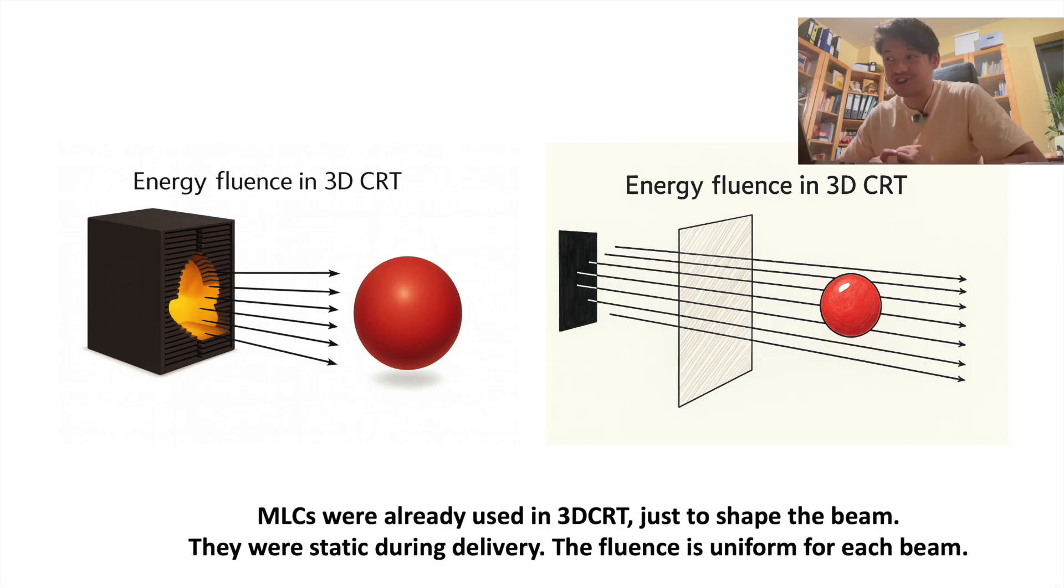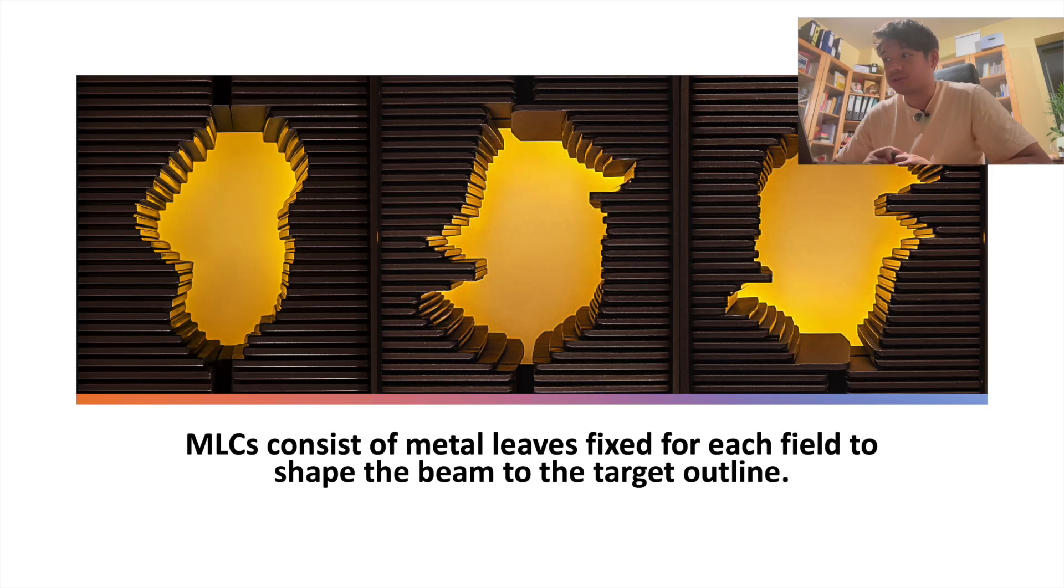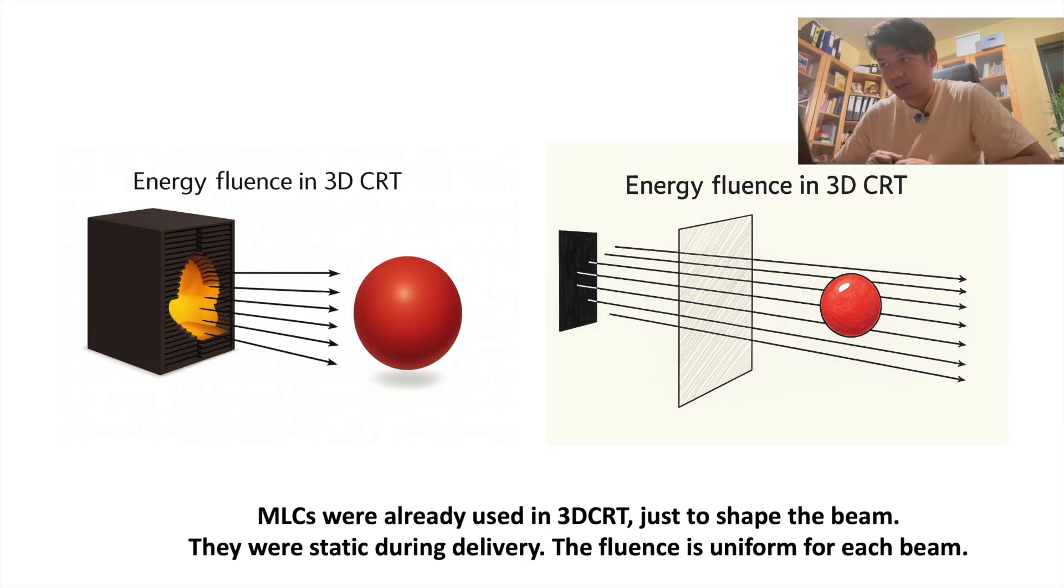In 3D CRT, energy fluence is uniform. That doesn't mean we weren't using MLC. They were there, but only to shape the beam. Fluence just means how many photons cross a given area, like this rectangle I represented here.